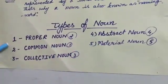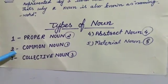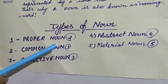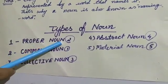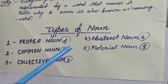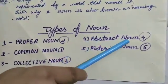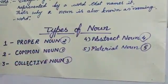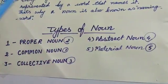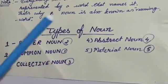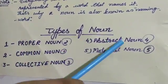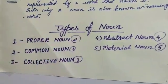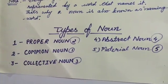Now let us move to the types of noun. I have written them randomly here, but if we go rule-wise, common noun comes first, then proper noun, then collective noun, after that abstract noun, and lastly material noun. So the types of noun are: common, proper, collective, abstract, and material.